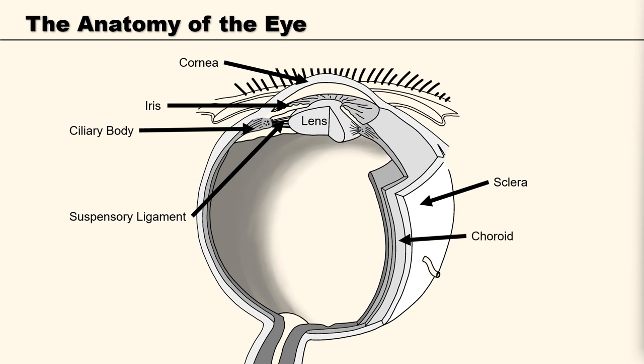The choroid is a part of the uvea, the vascular layer of the eye, and contains connective tissue. It lies between the retina and the sclera.